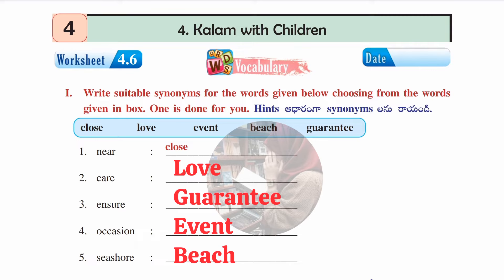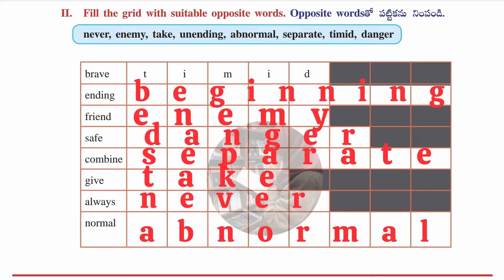Worksheet 4.6 is based on vocabulary. The first section asks us to write synonyms for given words, with hints provided. Answers: near → close; care → love; ensure → guarantee; occasion → event; seashore → beach.